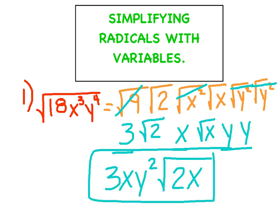Again, very similar to what we've been doing. Just take your time with these variables. We want one factor to be a perfect square — you want to see the number 2 — and anybody who's left over stays as itself. Let's try another example.